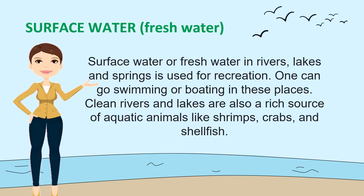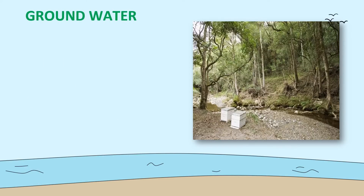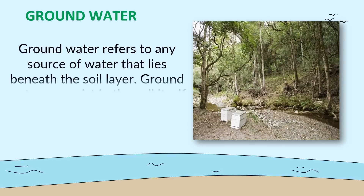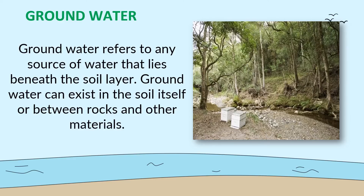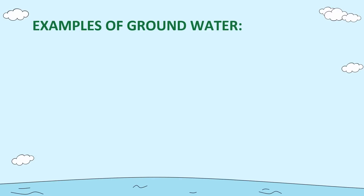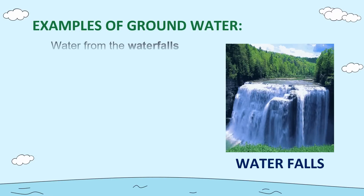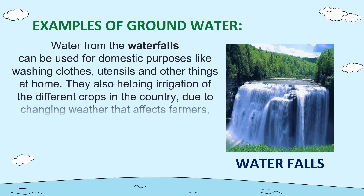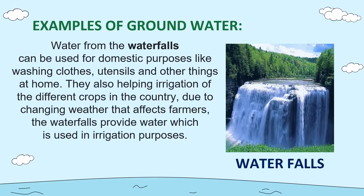Another major source of water is groundwater. Groundwater refers to any source of water that lies beneath the soil layer. It can exist in the soil itself or between rocks and other materials. An example of groundwater is waterfalls. Water from waterfalls can be used for domestic purposes like washing clothes, utensils, and other things at home. They also help in irrigation of different crops, especially as changing weather affects farmers.